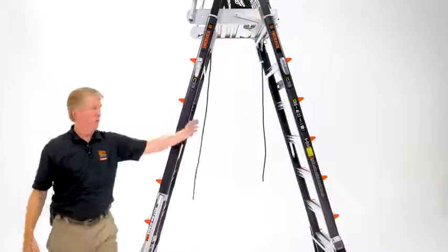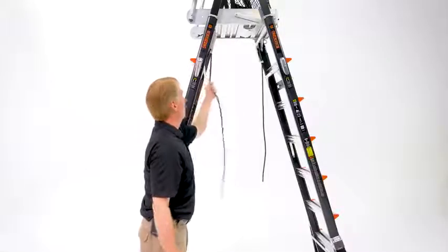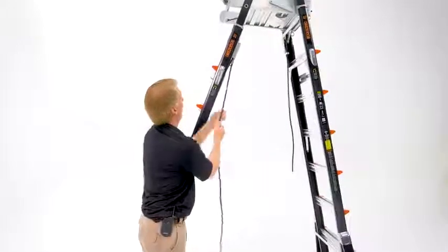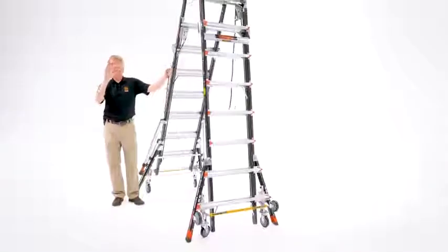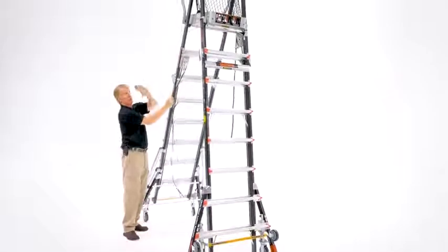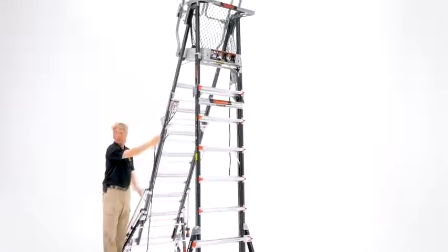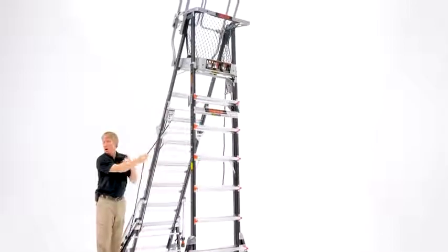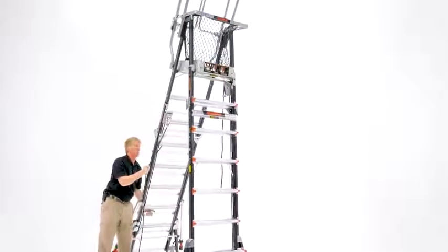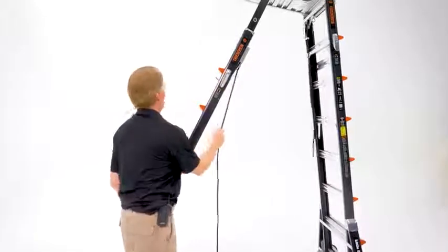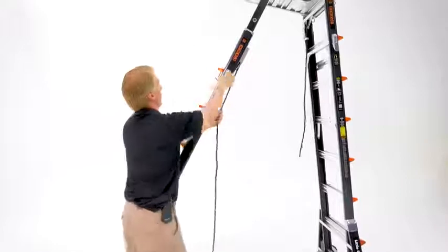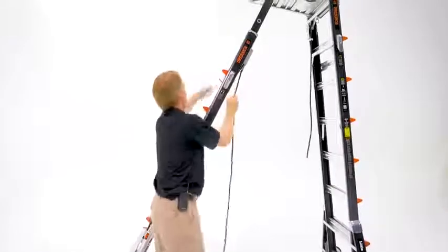So you're going to unlock the rock locks on both sides and then use the rope pulley system to raise that ladder up. Again, you're only going to want to go one to two rungs at a time, so that the top of the ladder doesn't become top heavy. And then you're going to need to adjust the bottom. As it goes up, it's going to flare out. So make sure that the bottom of the ladder is in position. Lock those rock locks in place.